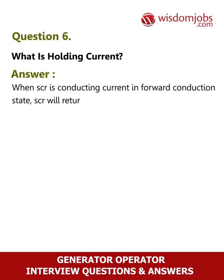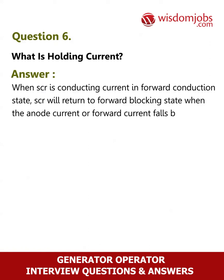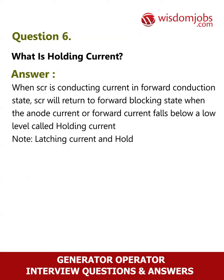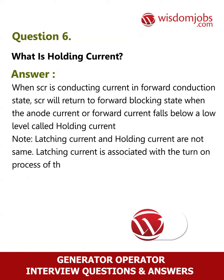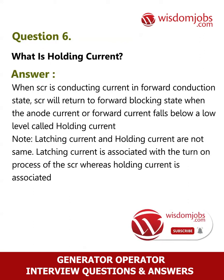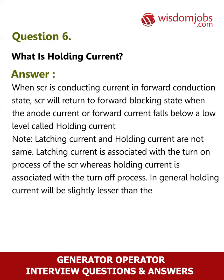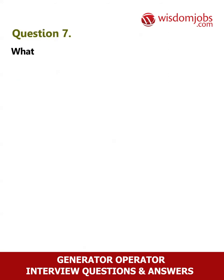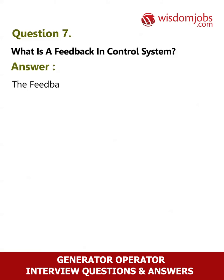Question 6: What is holding current? Answer: When an SCR is conducting current in forward conduction state, the SCR will return to forward blocking state when the anode current or forward current falls below a low level called holding current. Note: Latching current and holding current are not the same. Latching current is associated with the turn-on process of the SCR, whereas holding current is associated with the turn-off process. In general, holding current will be slightly less than the latching current.